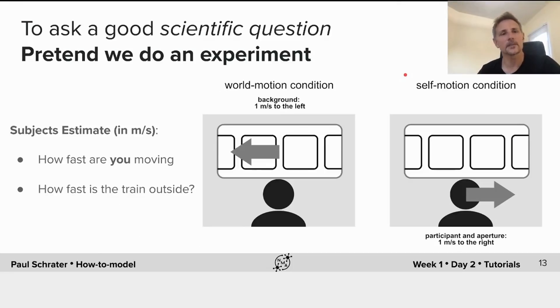Now that we have a scientific phenomena, we want to turn it into a question. Often the simplest way to do this is to pretend that we can do an experiment. So here we're going to engage in a thought experiment and simulate data for that thought experiment. What we'll imagine is that we can run people, participants, on a track in which they're sitting in an actual train car next to another actual train car.